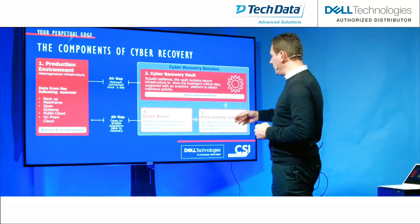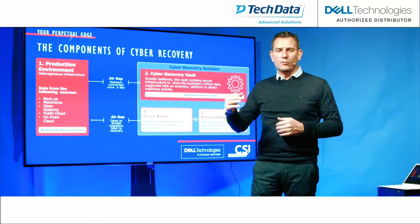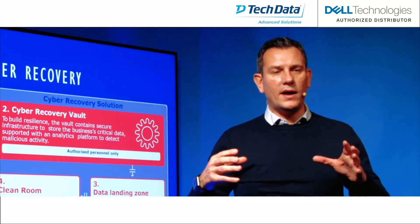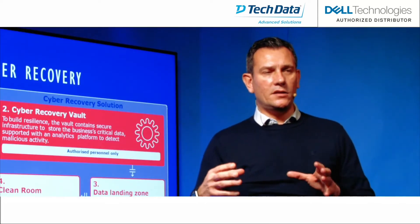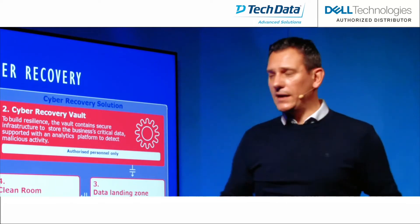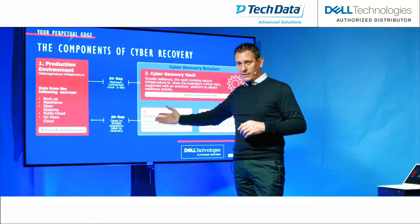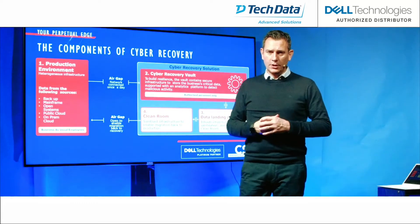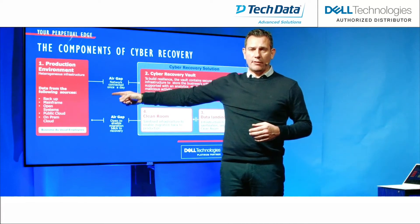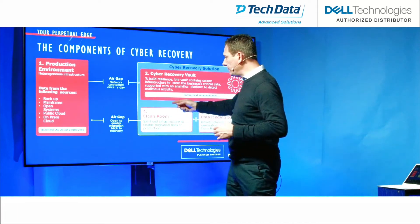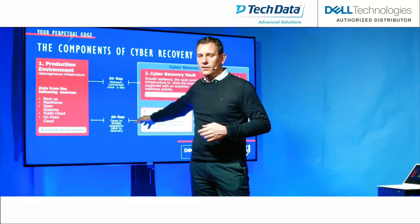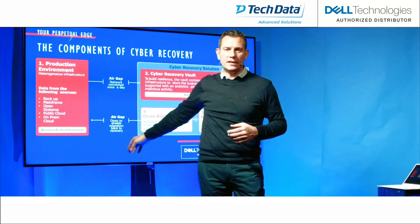Once the system has worked out what the good copy is, it moves that data into a landing space — an area whereby in the event of an attack and a known point at which the attack happened, you can start bringing that data back into what they call a clean room, which has been sanitized, and then make it available back to users to start running and carry on running the business. This is again through an air gap process so that you can't get people coming in through this route and corrupting the data.